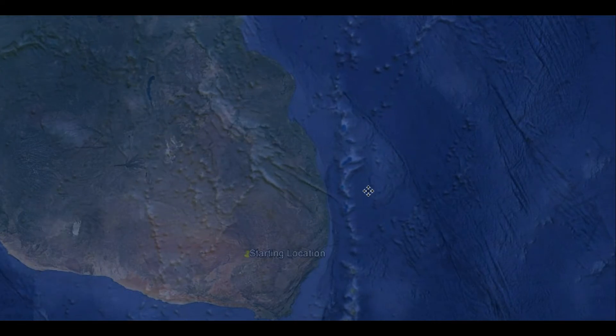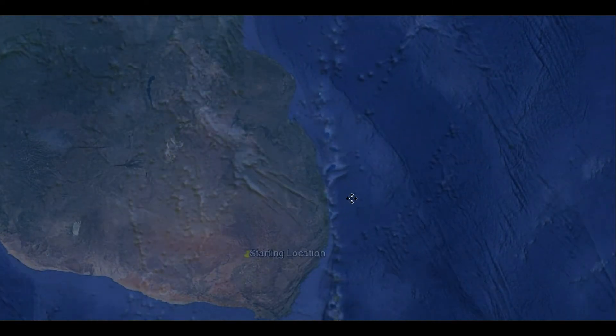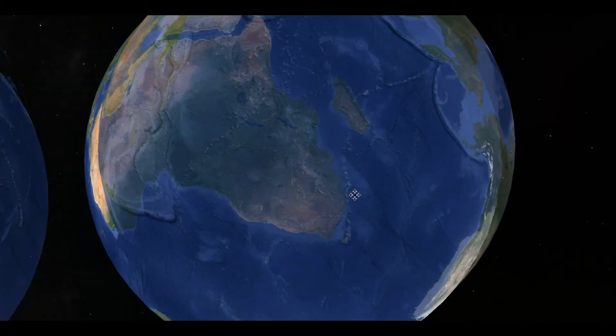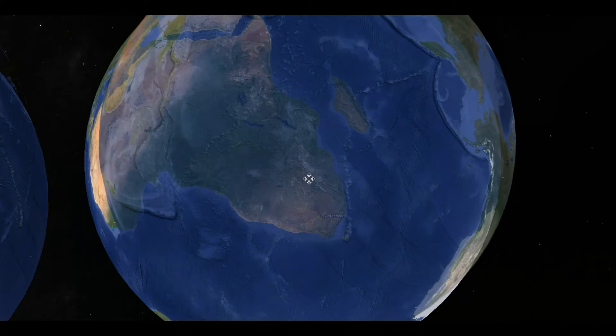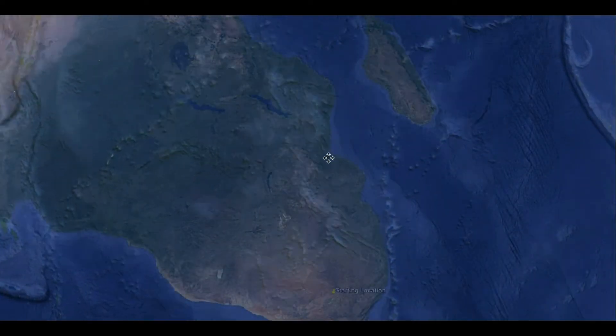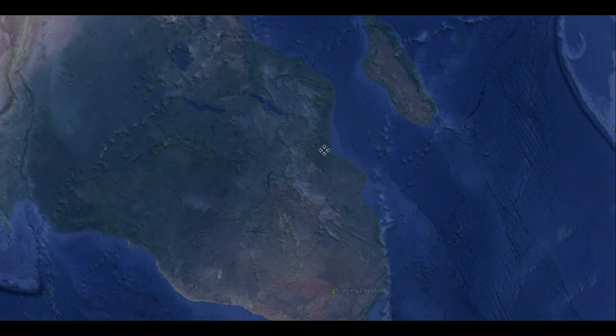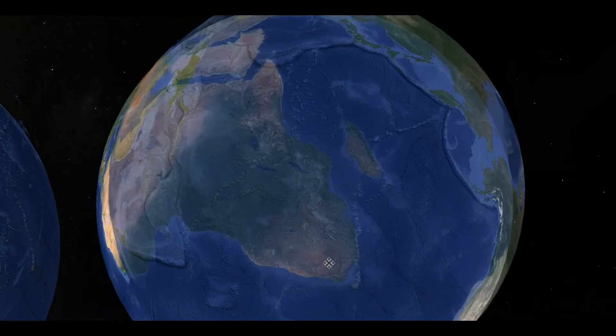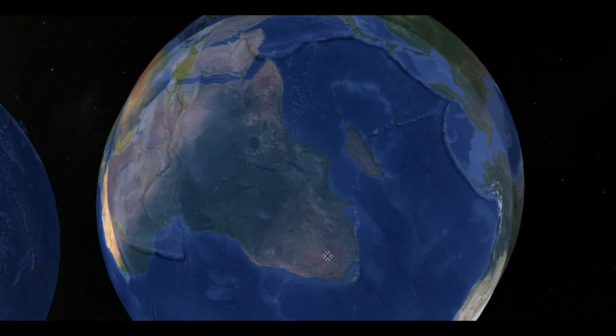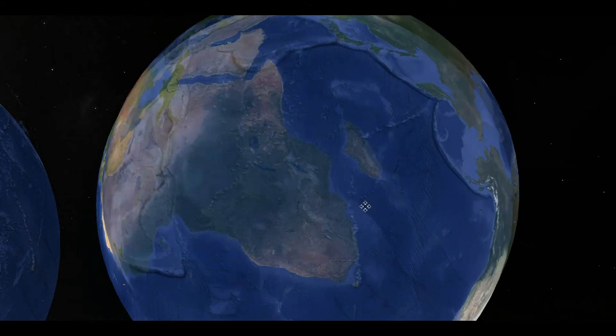They say the Hawaiian island chain is made by hot spots. And I'm positive that these marks line up with the features underneath.